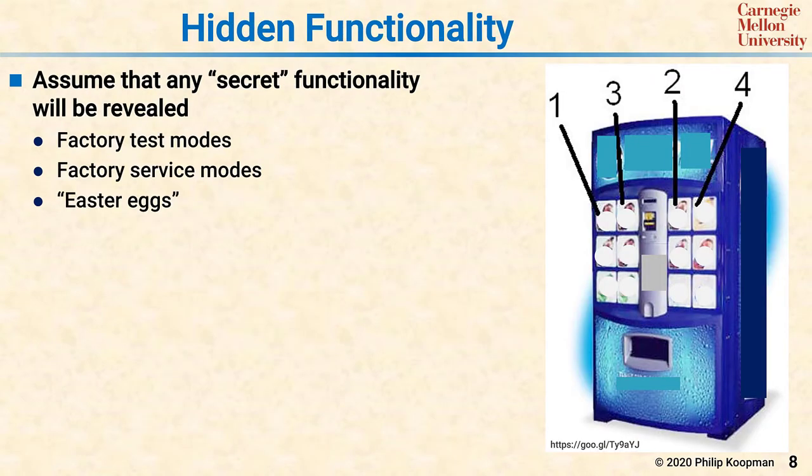Another common vulnerability in embedded systems is hidden functionality that is supposed to be a secret. You should assume that any secret functionality will be revealed — special key sequences to get into factory test modes, factory service modes activated by a hidden switch, Easter egg features. You have to assume people will figure out how to activate these things and exploit them. Sometimes that happens because the secret gets out from someone who knows it — they brag to friends, or get fired and reveal it as revenge.